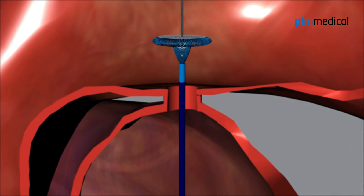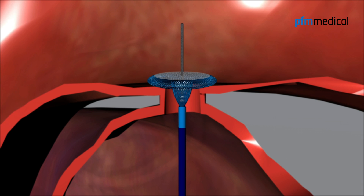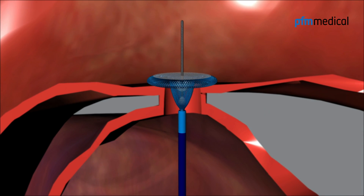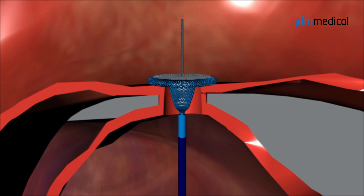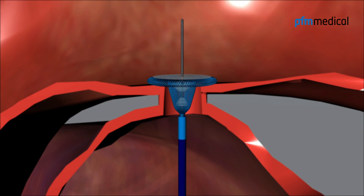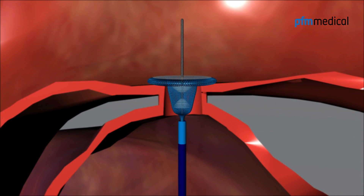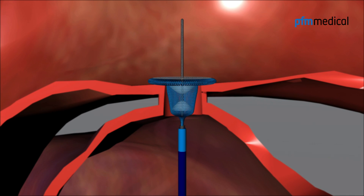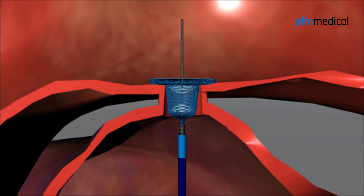The entire system is retracted until the occluder is carefully positioned inside the ductus. Now the stent part expands fully inside the ductus.